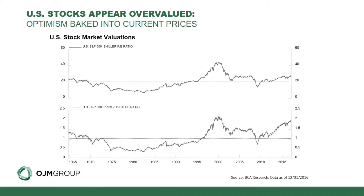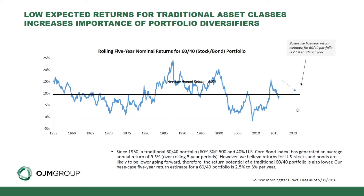Our longer-term outlook for US stocks is pretty muddled. We remain somewhat bearish and expect low single-digit annualized returns over the next five years in our base case scenario. A lot of this is driven by valuations — US stocks are near the upper end of their historical valuation range. As you can see on this chart going back to the mid-60s, we're well above the median trend line on both a price-to-earnings and price-to-sales perspective, approaching all-time highs.